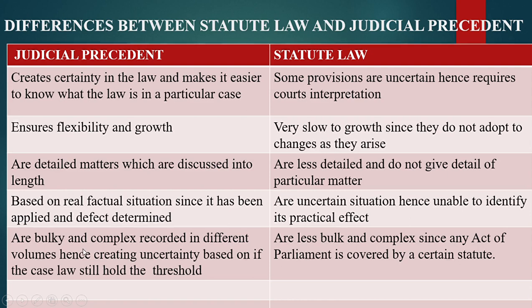Judicial President are bulky and complex, recorded in different volumes hence creating uncertainty on if the law still holds the threshold to be applied, while Stuntitudes are less bulky and complex since any act of payment is covered by a certain Stuntitude.